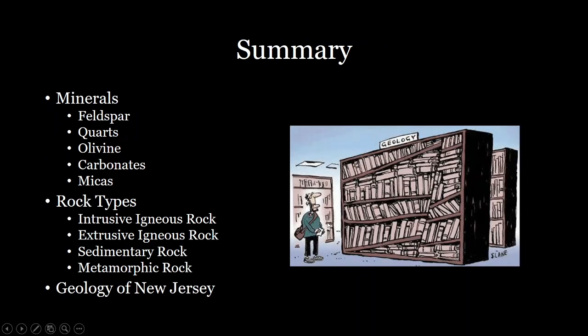That just about wraps it up. In summary, we talked today about different minerals including feldspar, quartz, olivine, carbonates, and micas. We also talked about different rock types including intrusive and extrusive igneous rocks, as well as sedimentary rocks and metamorphic rocks. And then we talked about some of the geology in New Jersey. Thank you everyone for watching — see you next time.